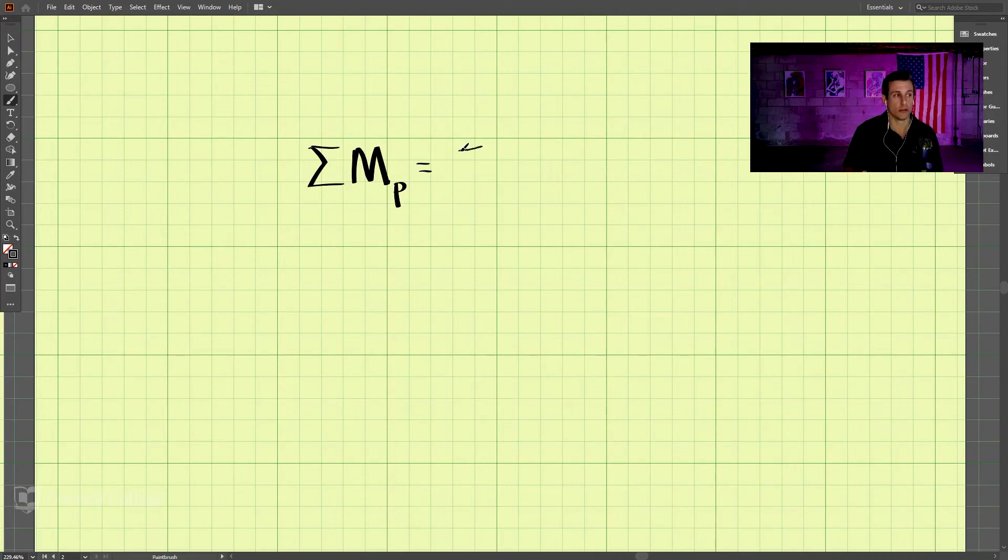This is equal to the sum of the moments in the kinetic diagram around point P. So I drew this kind of script M to indicate that it is the kinetic moments around point P. So what does this actually mean? We're going to go through a detailed example here in a second, but I just want to briefly go over it here.